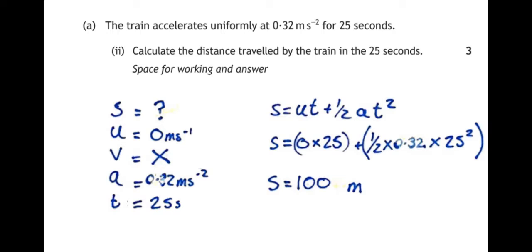Another issue that I see people do is that they square the half times 0.32 times 25 and then square all of that. The square applies only to the T. So be careful.